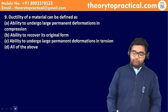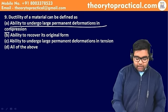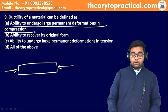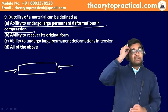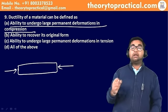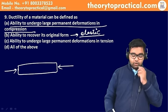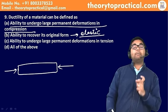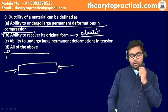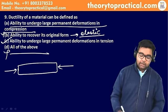अगला question: ductility of a material is defined as — Option A: ability to undergo large permanent deformation in compression। Compression में permanent deformation बहुत ज़्यादा होना ज़रूरी नहीं है। Option B: ability to recover its original form — यह elastic material की property है, ductile की नहीं। Option C: ability to undergo large permanent deformation in tension — yes, यही correct answer है।